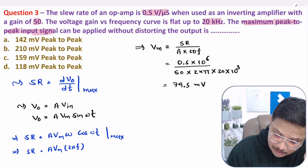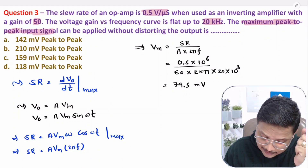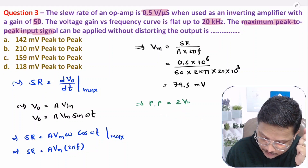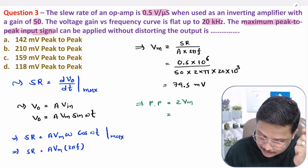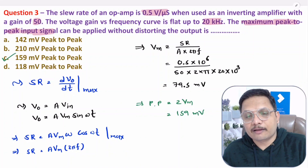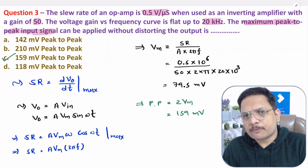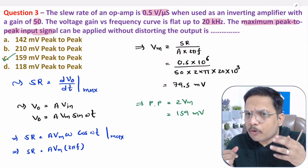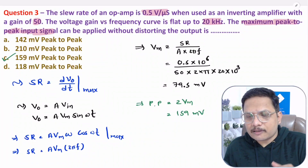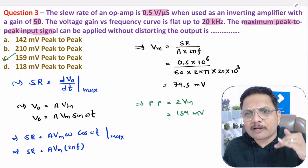The question asks for maximum peak-to-peak input, which is 2Vm. So peak-to-peak = 2 × 79.5 mV = 159 millivolts. Option C is the correct answer. I hope you understood the basic process of solving these questions. I'll be solving more examples based on op-amp parameters in the next video, which will further strengthen your understanding.